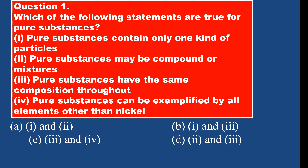Statement three is definitely correct. Statement four: pure substances can be exemplified by all elements other than nickel. We cannot exempt nickel — all elements including nickel are pure substances. So statements two and four are wrong.